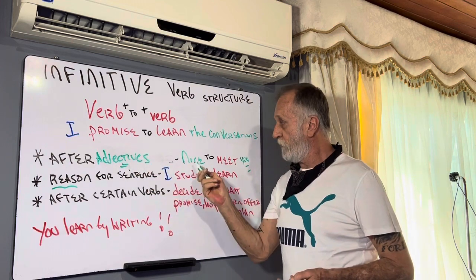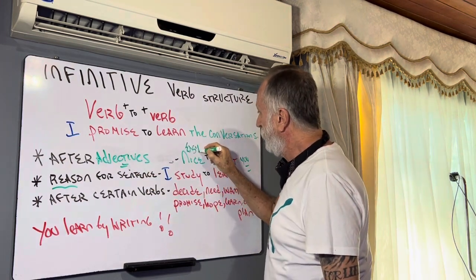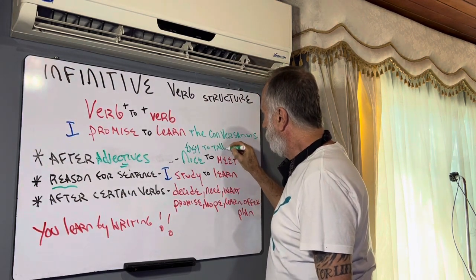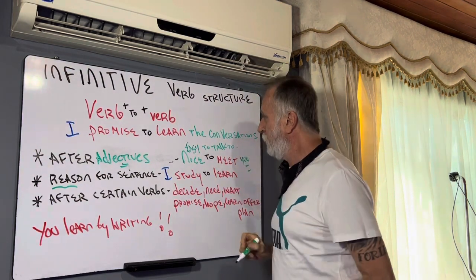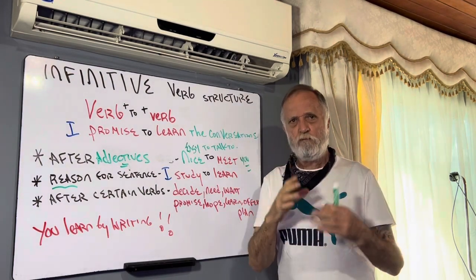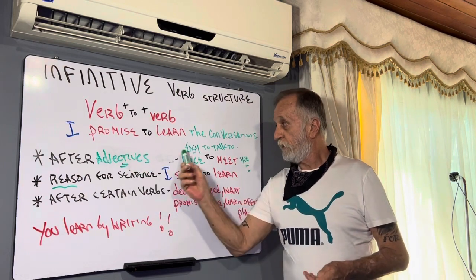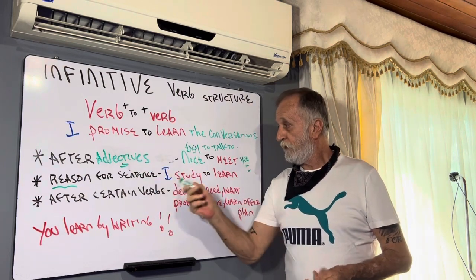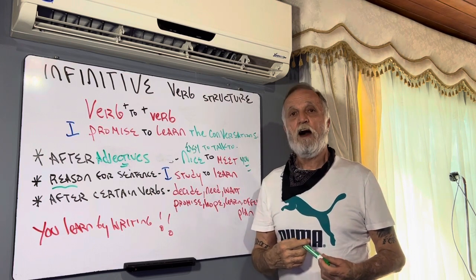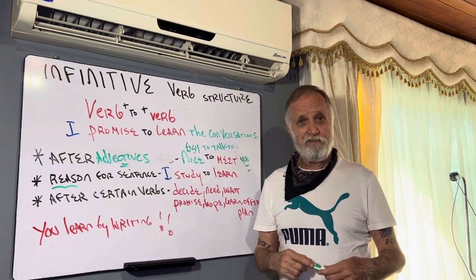Easy to talk to. Michael is easy to talk to — just tell him the truth, be honest. Adjectives. Reasons. I eat vegetables to stay healthy. I'm an old man, I need vegetables.